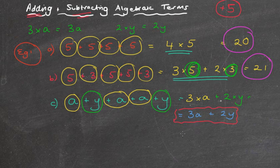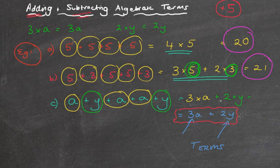So unfortunately, instead of having a number like 20 or 21 as we did above, we have just got an expression of 3A plus 2Y. Remember, algebraic terms, the 3A and the 2Y, these are what we refer to as algebraic terms. But the whole thing together is what we would call an expression, an algebraic expression.